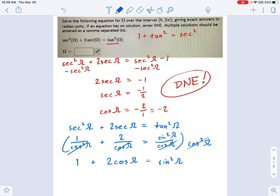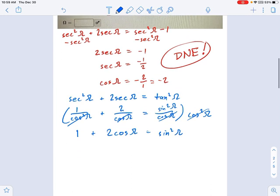And now we can make a sine squared substitution using the Santa Claus identity. So that's going to be equal to one minus cosine squared omega. And here we still have one plus two cosine. So move some things around. I want cosine squared on the left, so it's positive. And that's going to be cosine squared plus two cosine equals zero. The ones cancelled out.